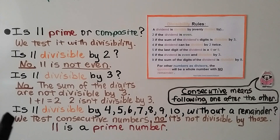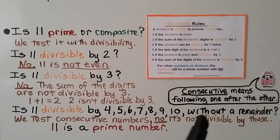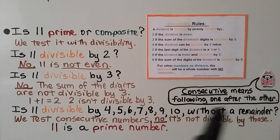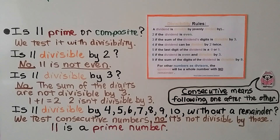Is 11 divisible by 4, 5, 6, 7, 8, 9, or 10 without a remainder? We test consecutive numbers — numbers following one after the other, like 1, 2, 3, 4, 5, 6 — and no, 11 is not divisible by those without a remainder. So 11 is a prime number; its only factors are 1 and 11.